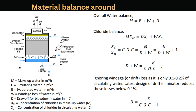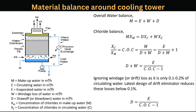Material balance around the cooling tower: M equals circulating water (m³/hr), E equals evaporated water (m³/hr), W equals windage loss (m³/hr), D equals draw-off or blow-down water (m³/hr), X_M equals concentration of chlorides in makeup water, X_C equals concentration of chlorides in circulating water. The overall balance is: M = E + W + D. A corresponding chloride balance equation is also applied.